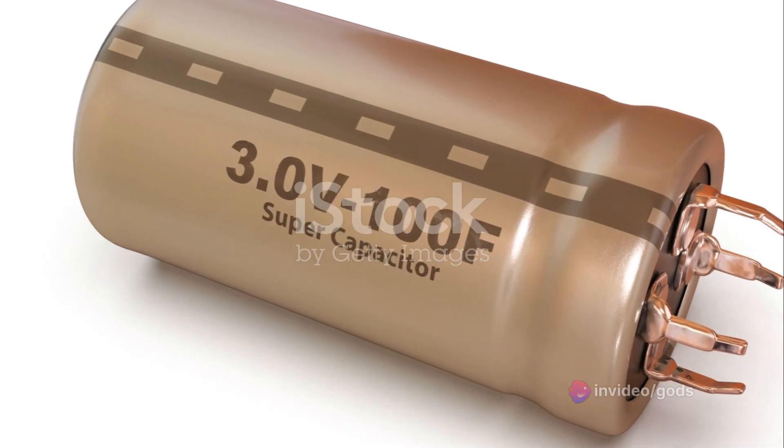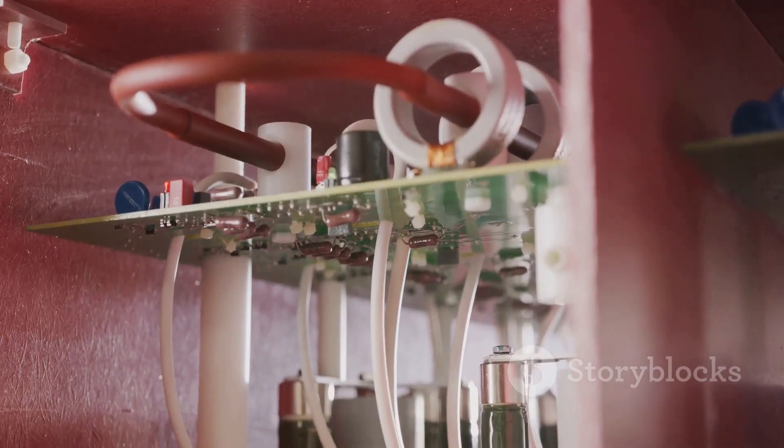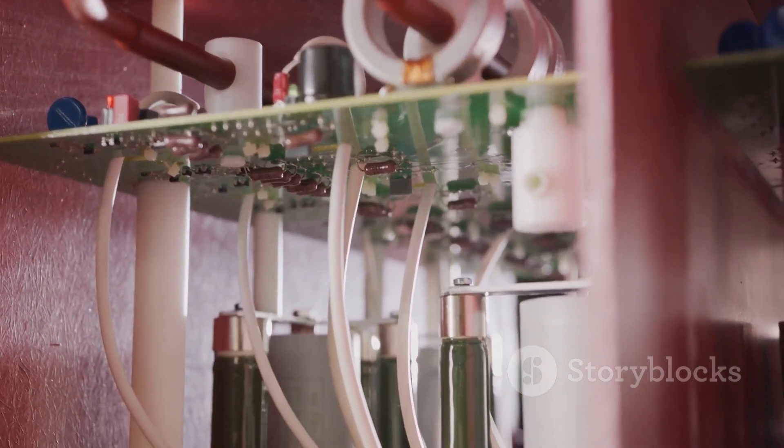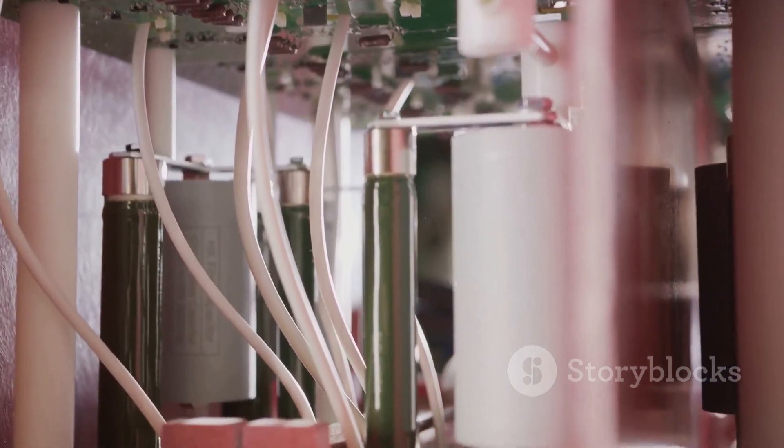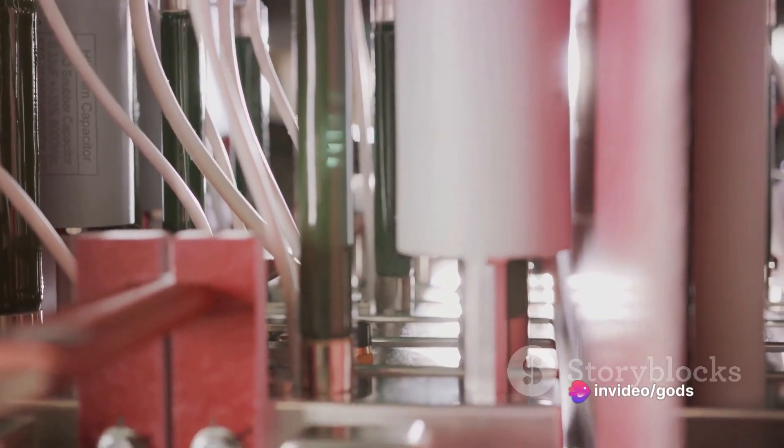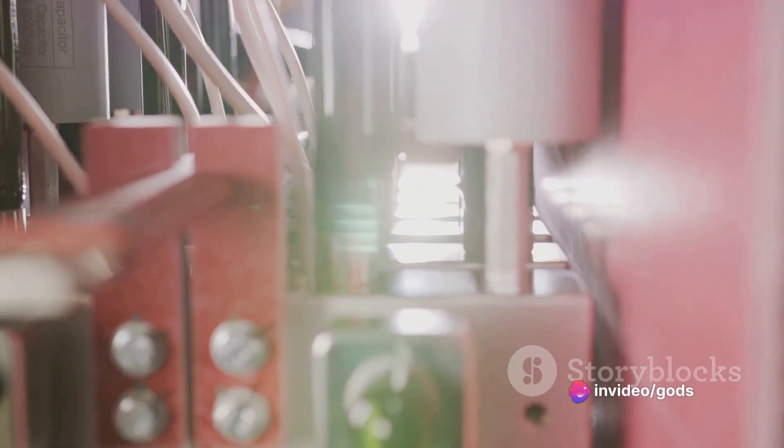When a voltage, or an electric potential difference, is applied across these plates, positive charges build up on one plate, while negative charges accumulate on the other. This separation of charges creates an electric field and stores energy.